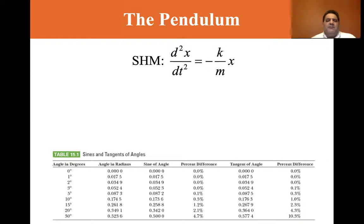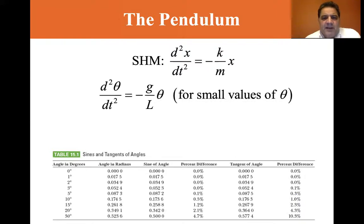So if we keep it small, we can model, instead of sine theta, we can have minus g/L theta for small values of theta. And so that does look like simple harmonic motion.